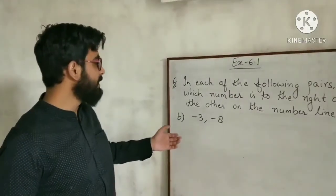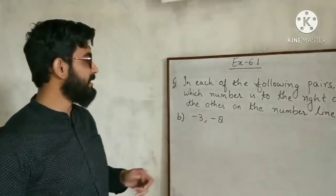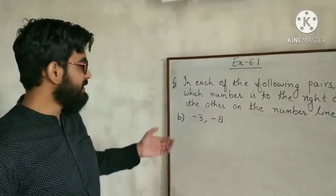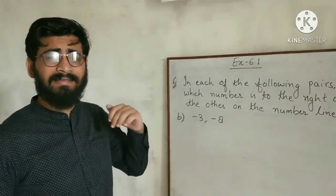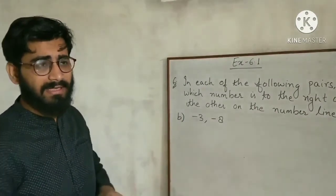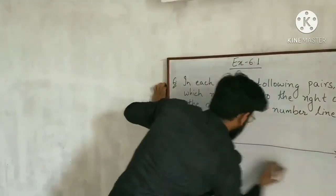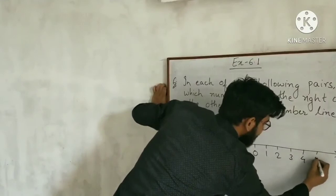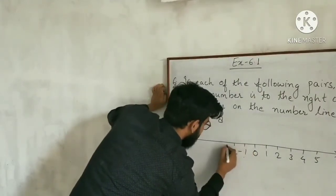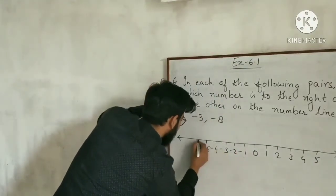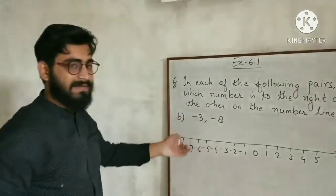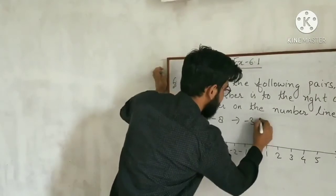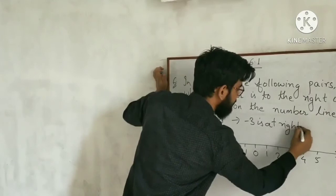For part v, out of minus 3 and minus 8, which number is to the right on the number line? The number which is greater is at the right. Out of minus 3 and minus 8, minus 3 is greater because it is at the right side of minus 8 on the number line. You can verify by drawing the number line: minus 8 is further left, minus 3 is closer to 0. So minus 3 is at right of minus 8 because minus 3 is greater than minus 8.